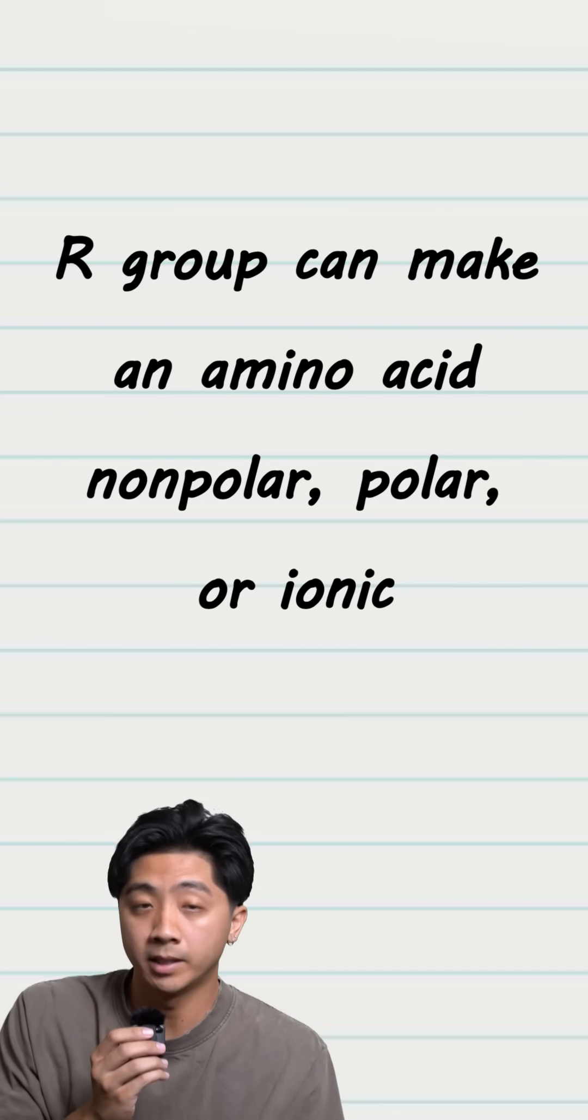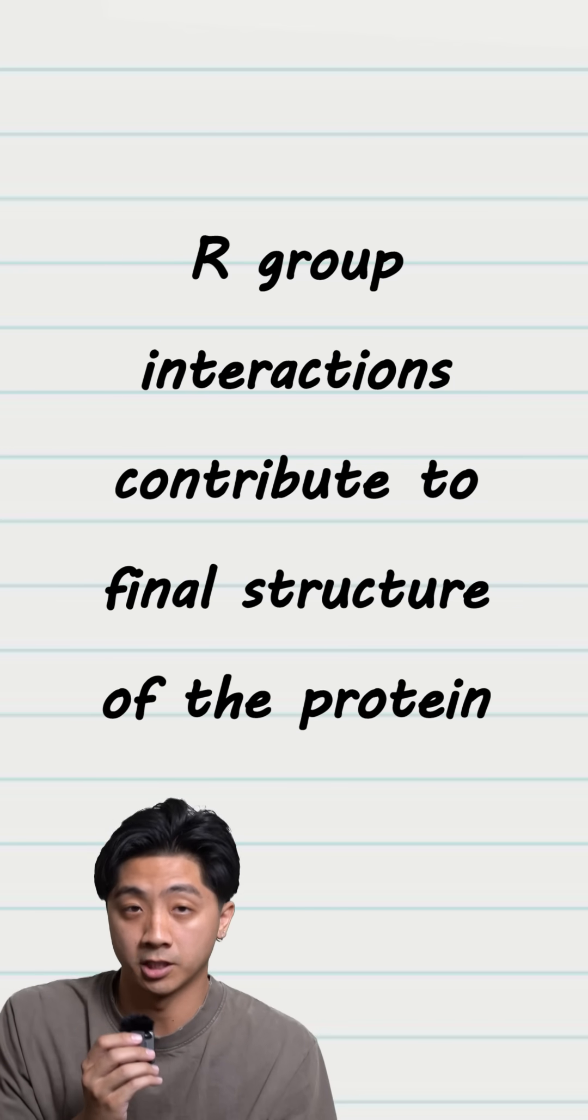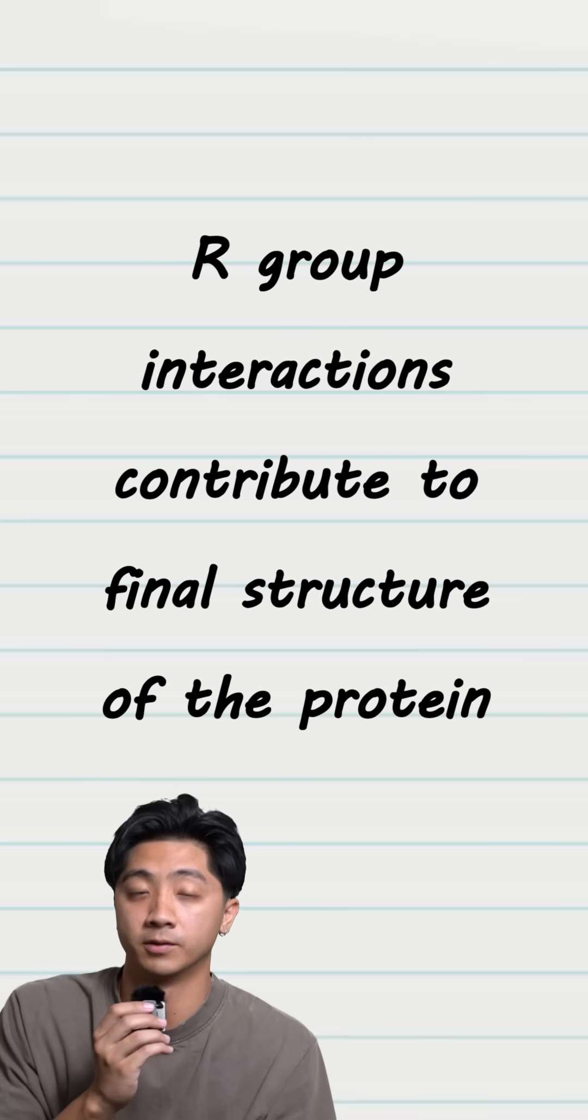Depending on the R group, it can make the amino acid nonpolar, polar, or ionic. The interactions of the R groups in this chain will eventually determine the structure of the protein.